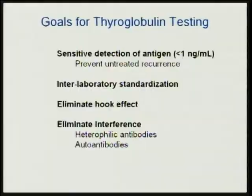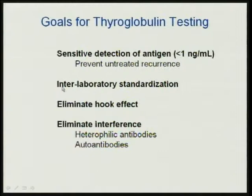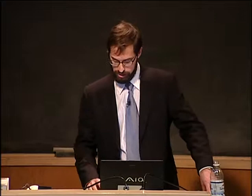The goals: if we had the perfect thyroglobulin assay, it would be sensitive — and I put up the number one nanogram per mil because this level of sensitivity has been documented to prevent untreated recurrence. We'd like interlaboratory or interplatform standardization. We'd like to get rid of the hook effect. And of course we'd like to eliminate heterophilic or anti-reagent antibodies and autoantibody interference. So I would propose that we do this using mass spectrometry.